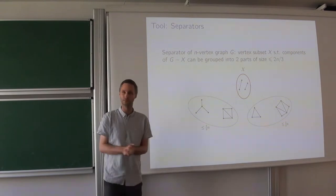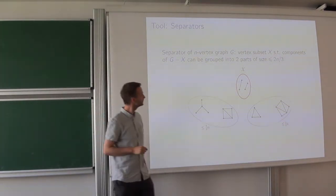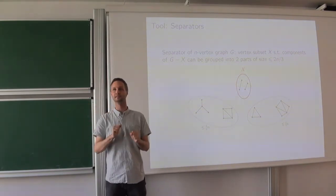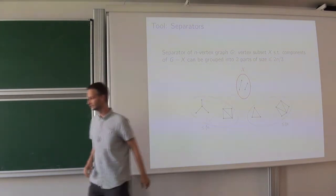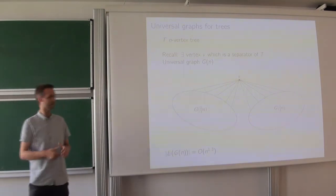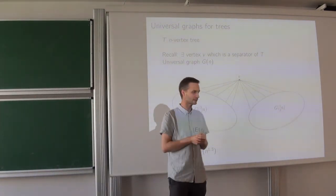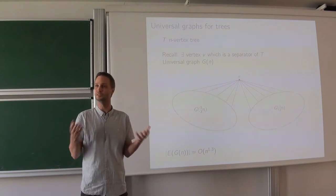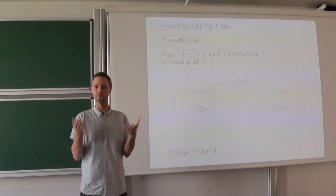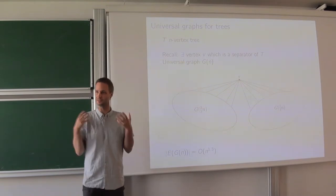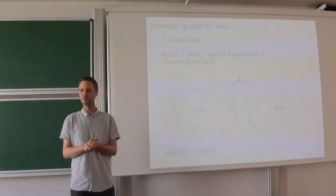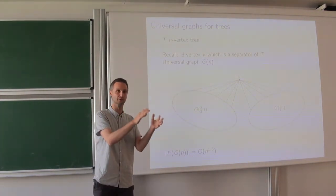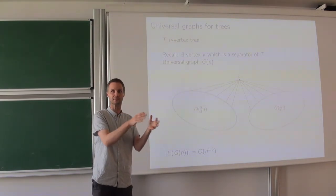Let's focus on how to build universal graphs with separators. This is very natural and quite classic. As a warm-up, and this will be pretty important for this lecture, let's try to build universal graphs for n-vertex trees. We care about planar graphs, but let's start with trees so we understand what to do with them. The idea is: if you want to apply product structure, you should first understand how to deal with your problem on bounded tree-width graphs, so it seems a good idea to start with trees. The basic fact we are going to use is that in an n-vertex tree there is always a single vertex which is a separator.